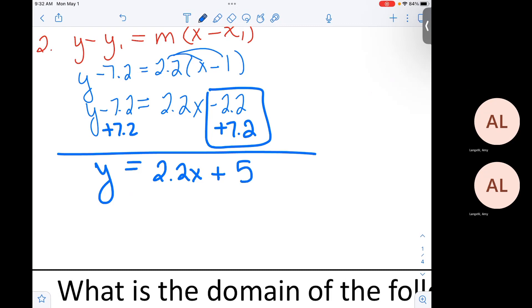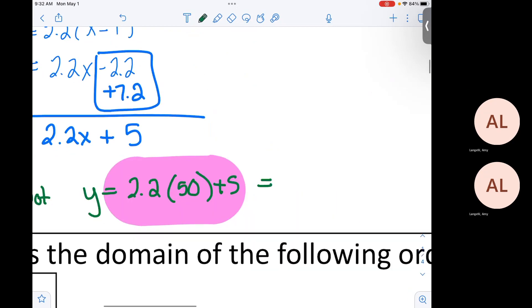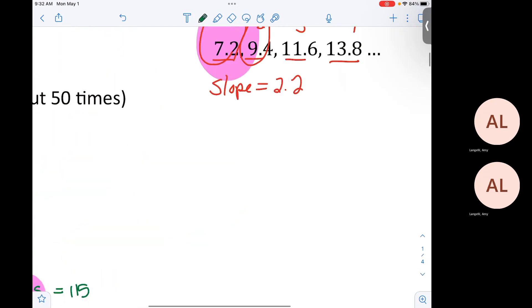And what would the equation be? Y equals 2.2X plus 5. That's your equation. Now, the problem, step three, asked about the 50th spot. Does anybody know how to do that? Plug 50 in for X. Grab a calculator. You can type this in one step in your calculator.